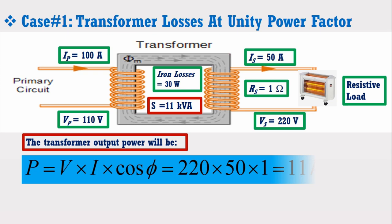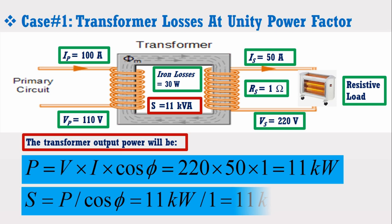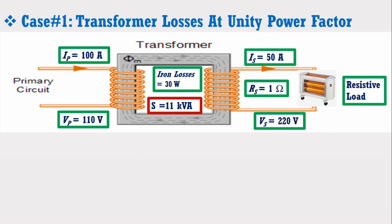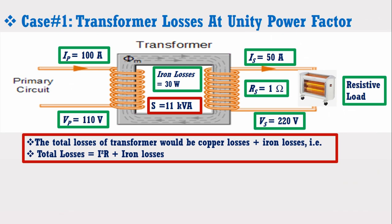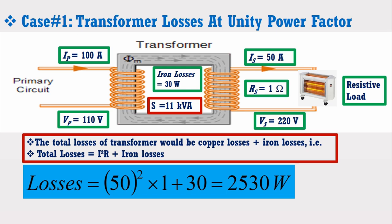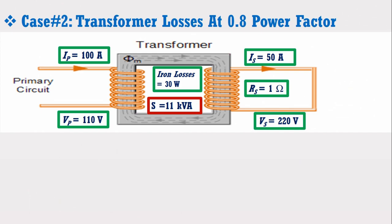The transformer output power is given by P = V × I × cos φ. Putting the values of secondary voltage, current, and power factor, we find that the transformer has fully converted the apparent power into useful power of 11 kW. Similarly, the apparent power equals 11 kVA. The total losses of the transformer equal copper losses plus iron losses. Putting the values of secondary current and resistance, the transformer has total losses of 2530 W. It may be noted that the losses expression has no effect of power factor.